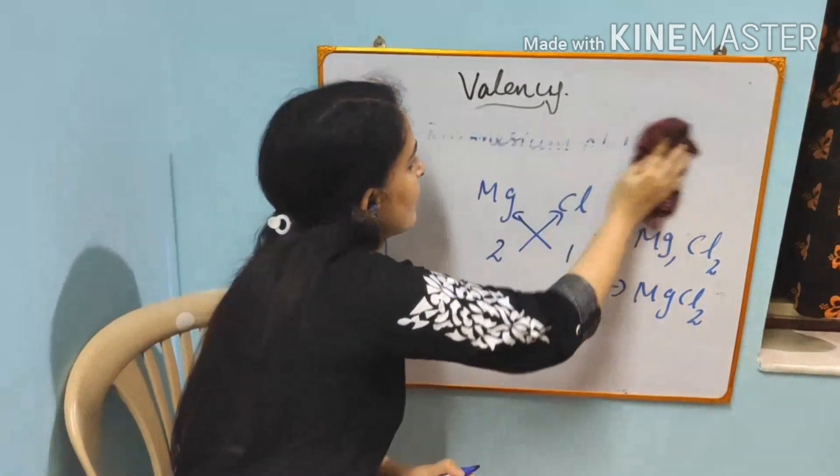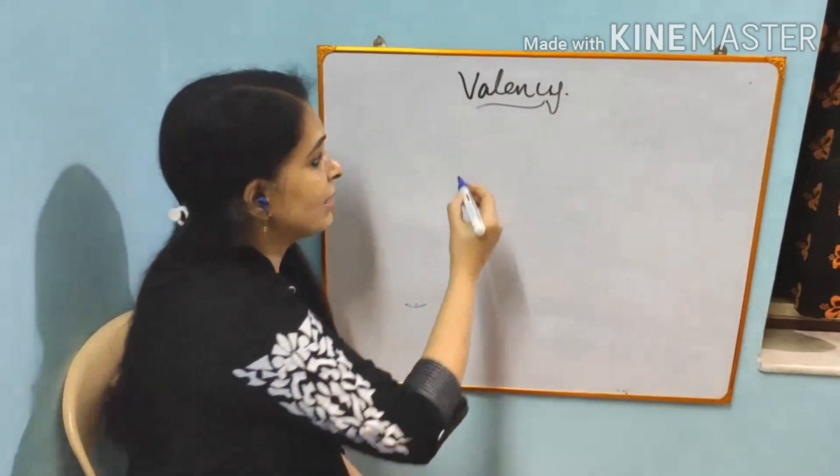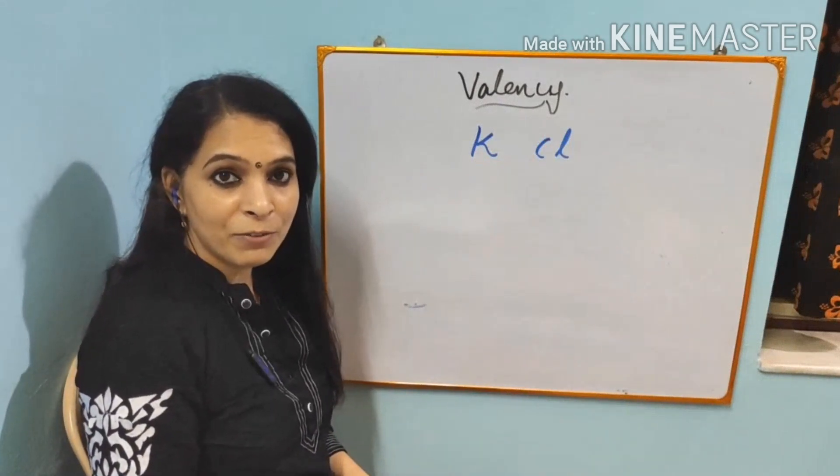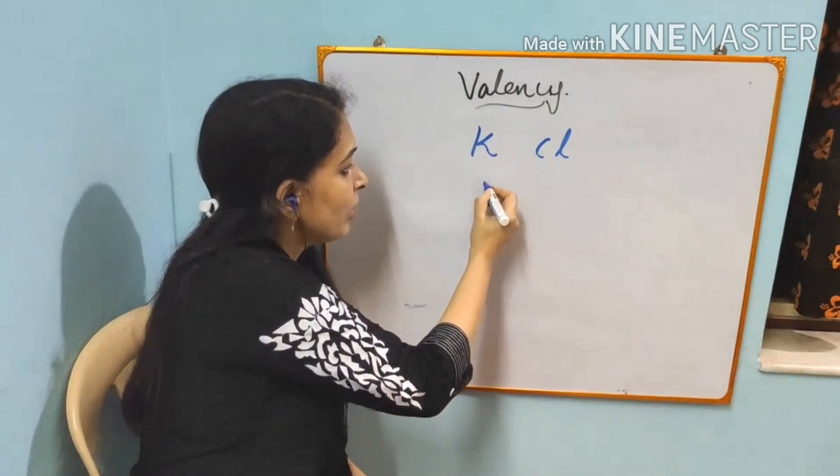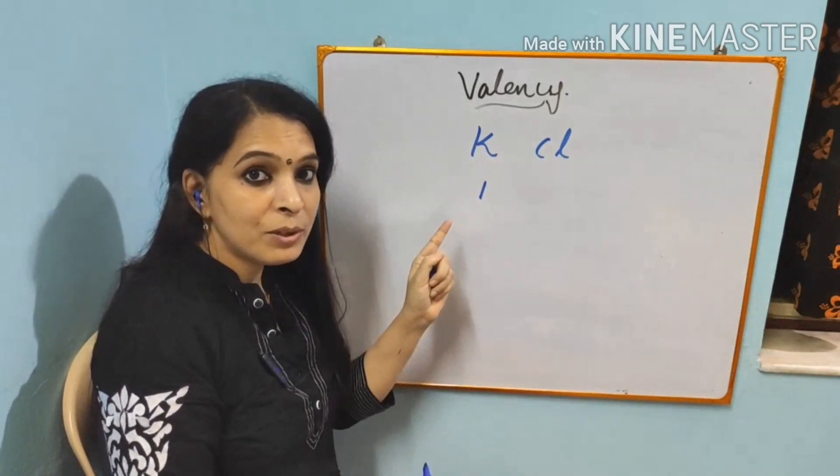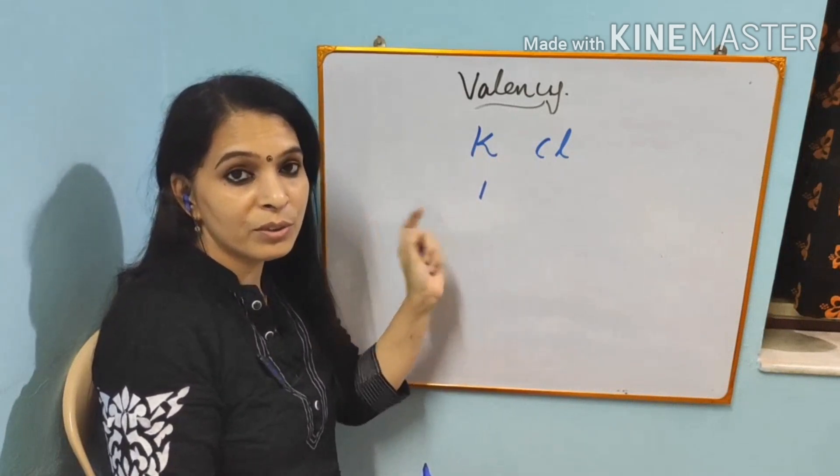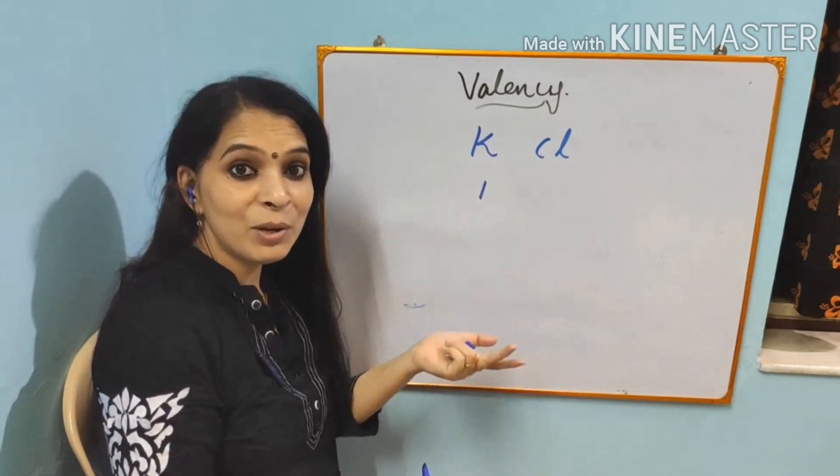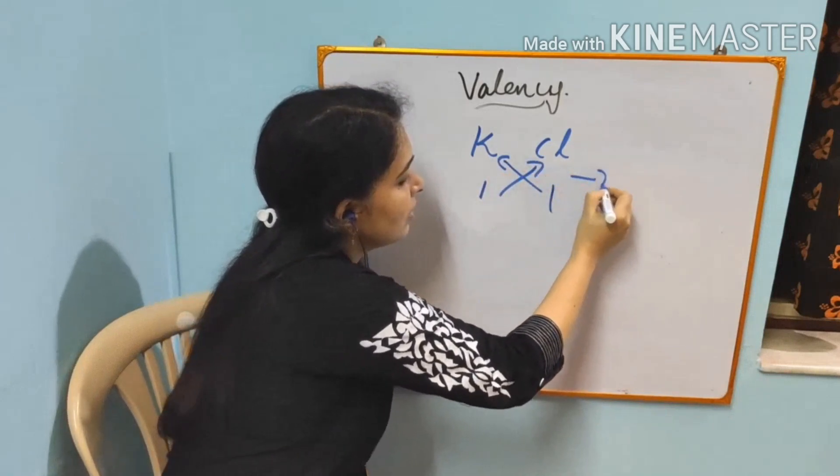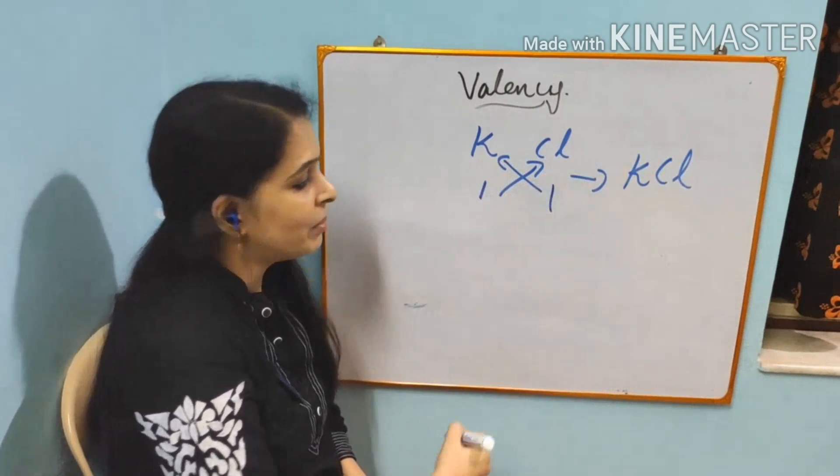Now I will show you another example. KCl. Let us take KCl. As I said, potassium will ask chlorine, can you be my friend? Chlorine will ask, what is your valency? Potassium's valency is 1. Where are you getting all these valencies from? You will get it from the periodic table. Please watch my first video again and see how are you going to find out the valency. Then chlorine will tell, yeah, I can be your friend. My valency also is 1. So it will be criss-crossed. Then the formula is KCl.